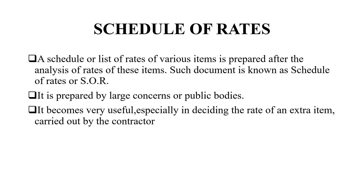In the analysis of rate, the main part is the schedule of rates. A schedule of rates of various items is prepared after the analysis of rates of those items. Such a document is called the schedule of rates, and it is prepared by large departments of public works — that is, the PWD.